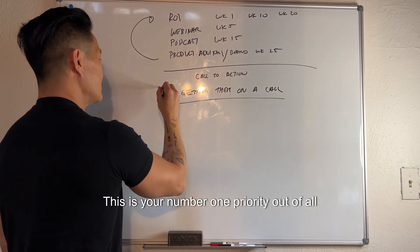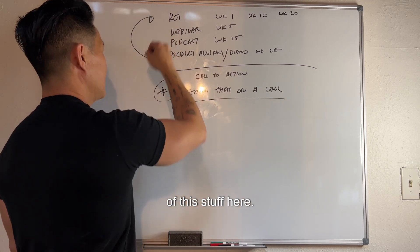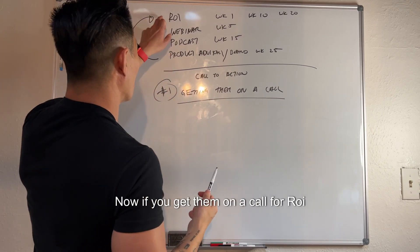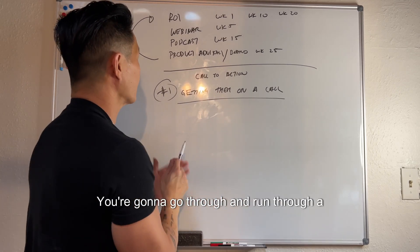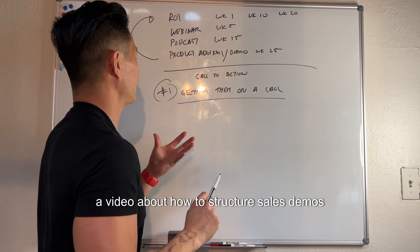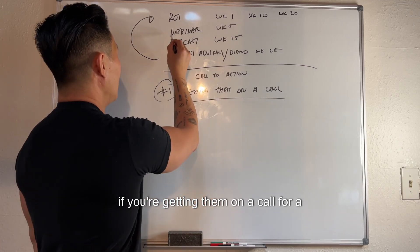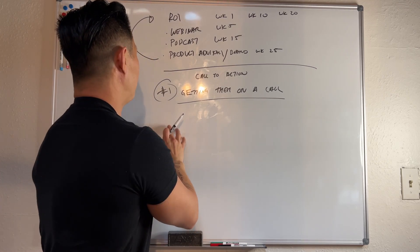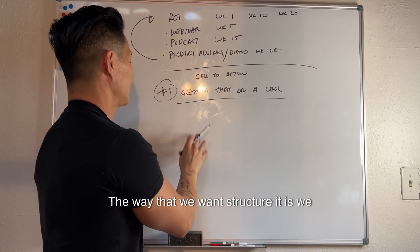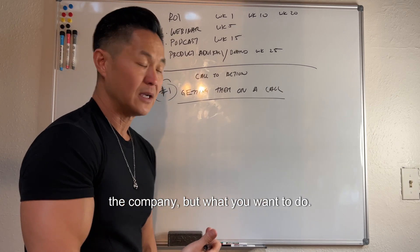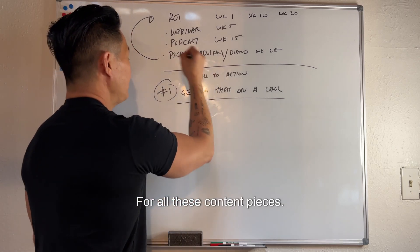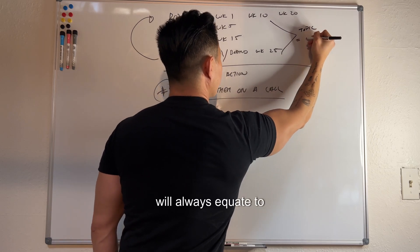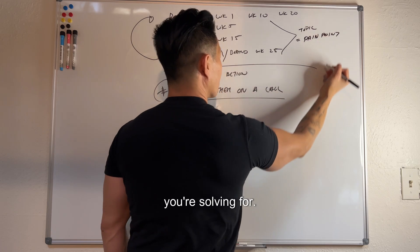Getting them on a call is your number one priority out of all of this. If you get them on a call for an ROI sequence, you'll run through a sales demo. But if you're getting them on a call for a webinar, podcast, or product advisory board, it's similar to a demo but structured a bit differently - because you don't want to be overly pitching. All of these content pieces should cover the topic of the pain point you're solving for.